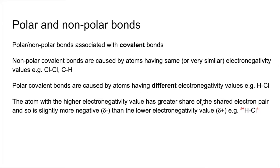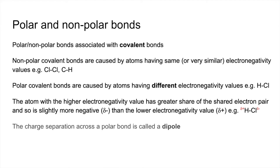So in the case of HCl, the hydrogen is slightly positive and the chlorine is slightly negative. In the exam you'll be given electronegativity values — you don't have to memorise them. And finally, the charge separation across a polar bond is what we call a dipole.